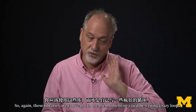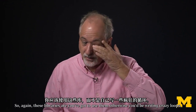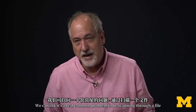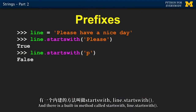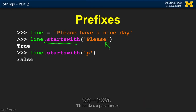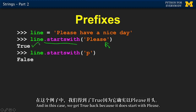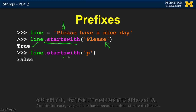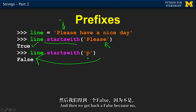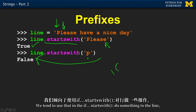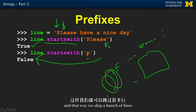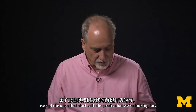A common task is scanning through a file and wanting only the lines that start with a certain prefix. There is a built-in method called startsWith. line.startsWith('Please') returns true because the line does start with 'Please'. Does it start with lowercase 'p'? We get back false. It returns true or false, and we typically use that in an if statement to skip lines except the ones that start with the prefix we're looking for.